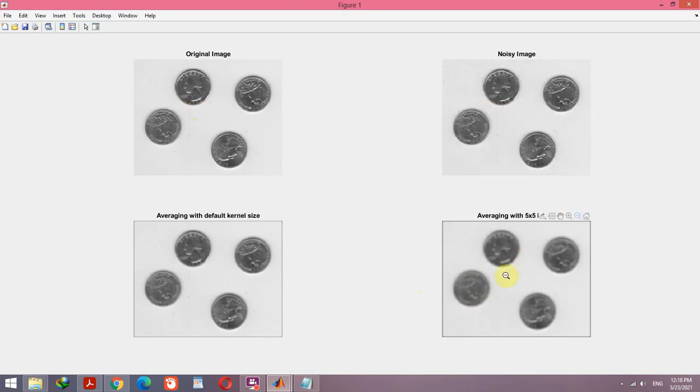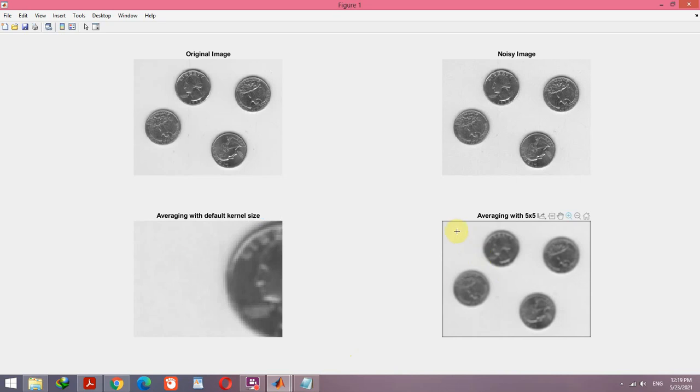So as you can see by applying a larger filter the result image is more blurred with respect to this one. And in both of the images the noise are successfully removed, and as you can see with larger size filter we remove the noise better.